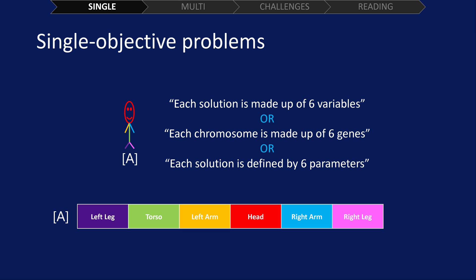There are also many different terms to describe the solution's variables as well. Some of these are genes, variables, or parameters. It depends on your background and what approach you're using to the optimization. For example, all the following mean the same thing. Each solution is made up of six variables. Each chromosome is made up of six genes. Each solution is defined by six parameters.